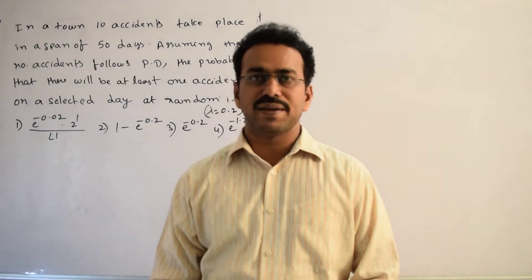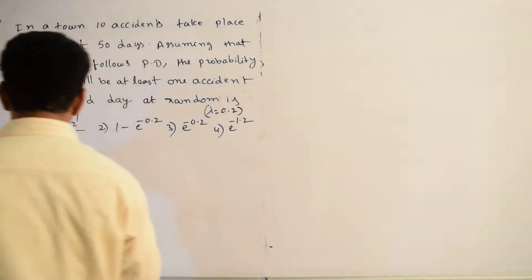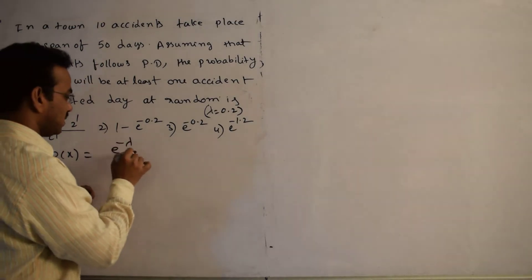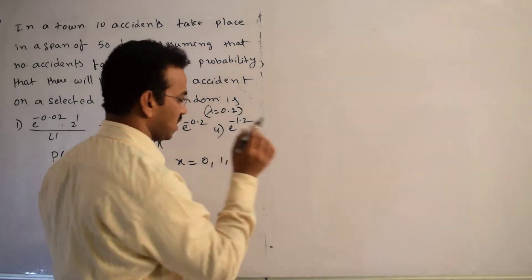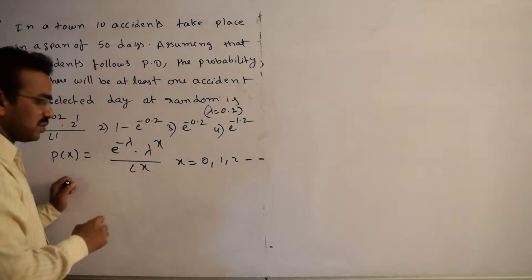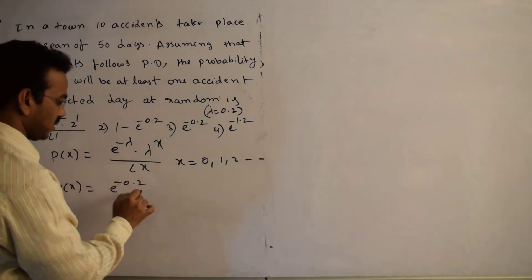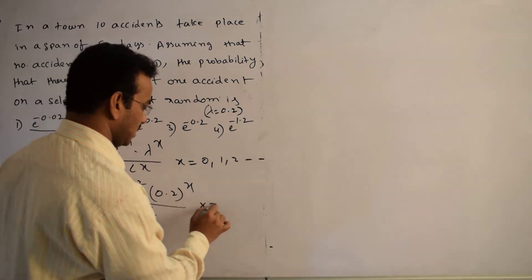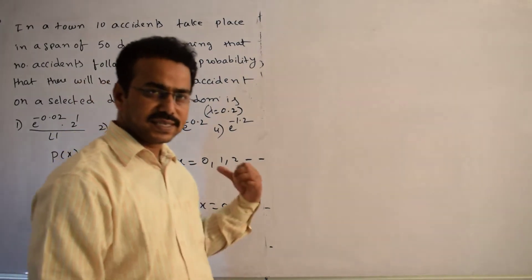Clearly in the given problem, they mentioned that we have to use Poisson distribution. The Poisson distribution is: P(x) = e^(−λ) × λ^x / x!, where x = 0, 1, 2, and so on. Since lambda equals 0.2, the distribution becomes P(x) = e^(−0.2) × (0.2)^x / x!, where x = 0, 1, 2, and so on.